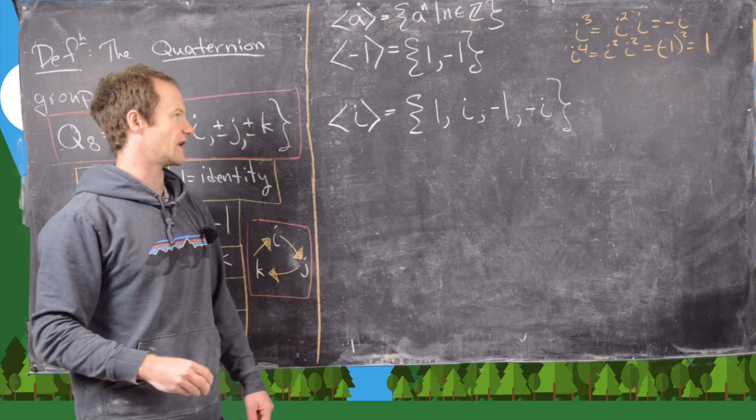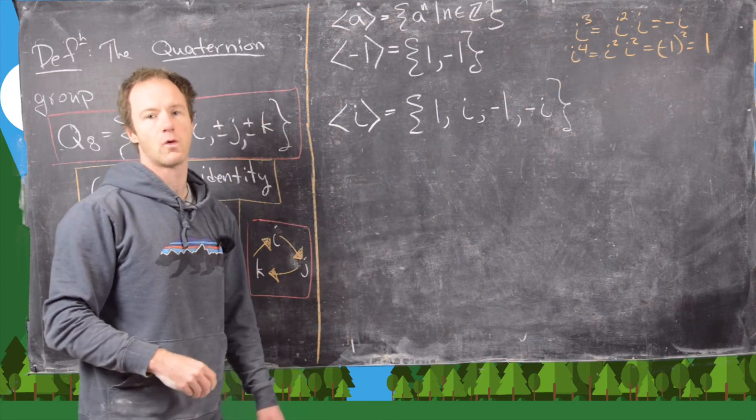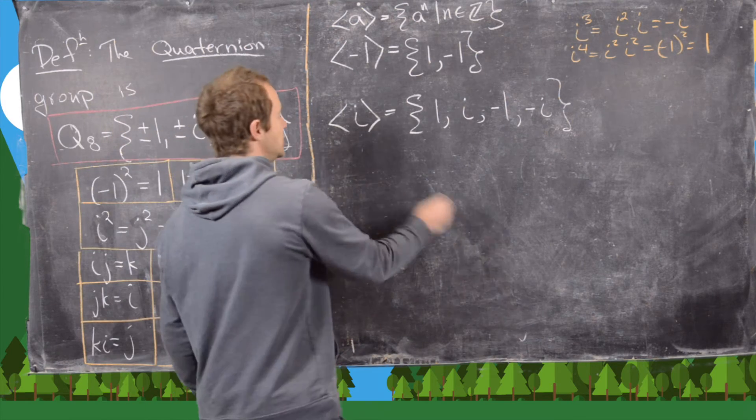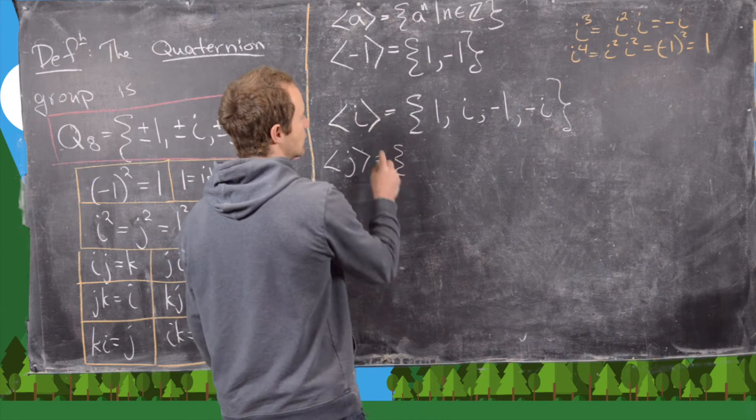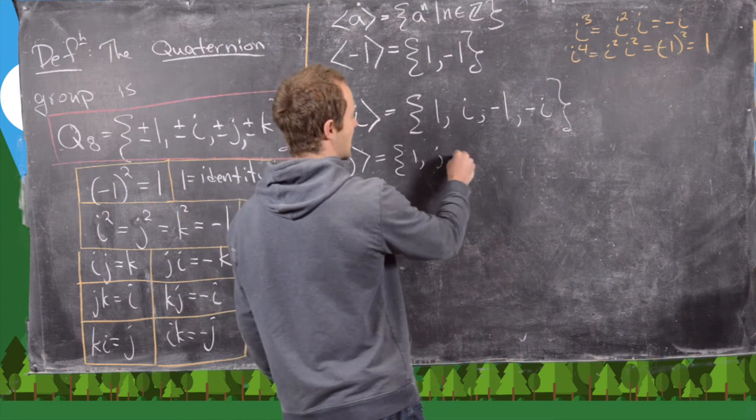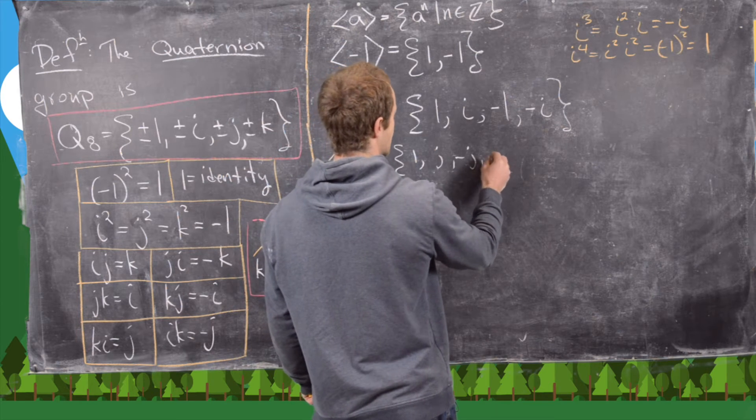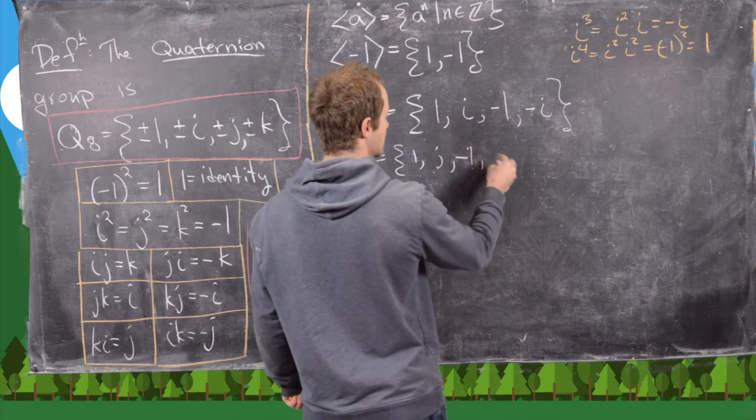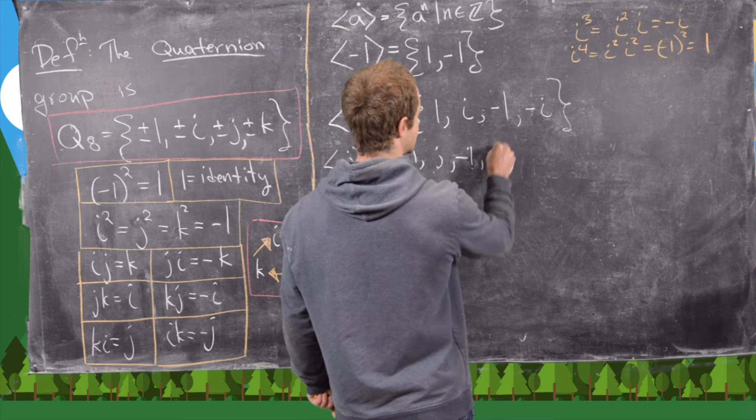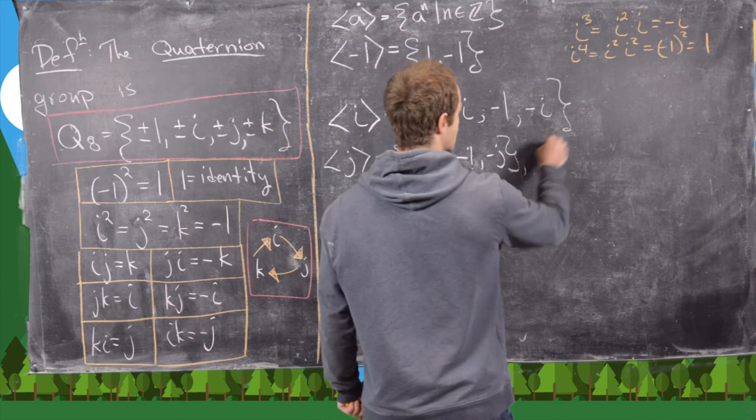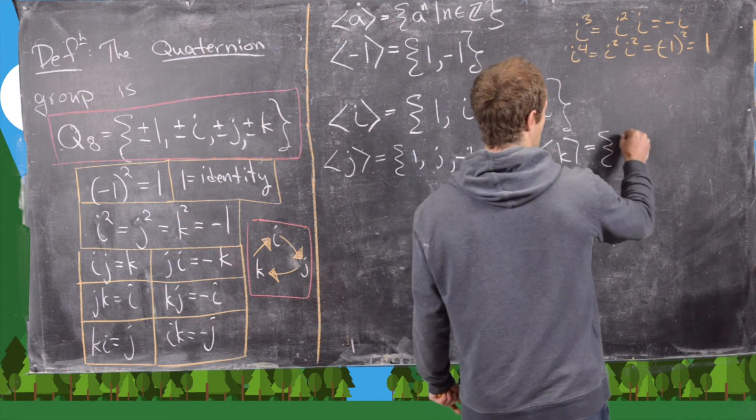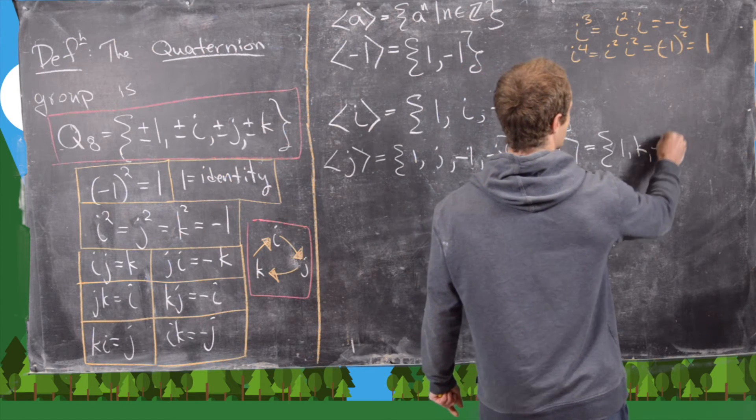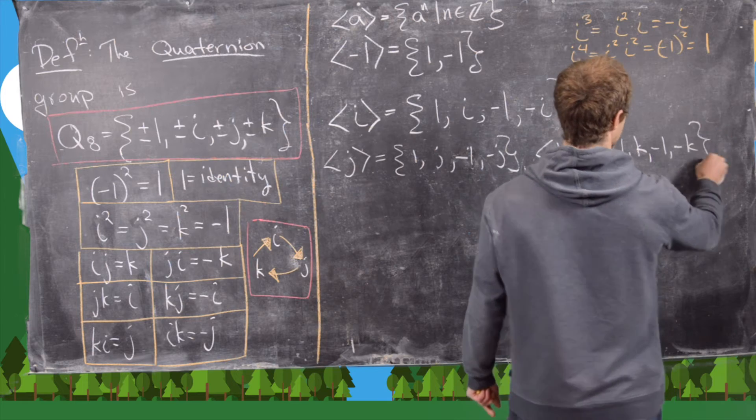So there we have the cyclic subgroup generated by i are these four elements. And now you can similarly have the cyclic subgroup generated by j, which is going to be given by 1, j, minus 1, and then minus j. And then also the cyclic subgroup generated by k is equal to 1, k, minus 1, minus k.